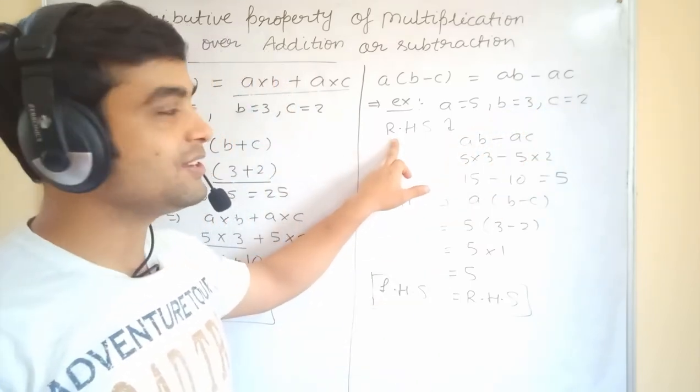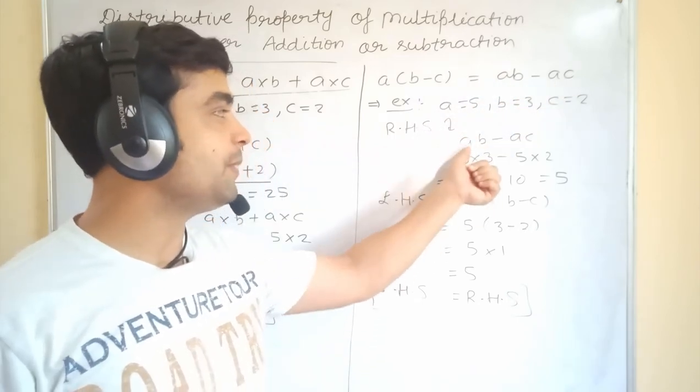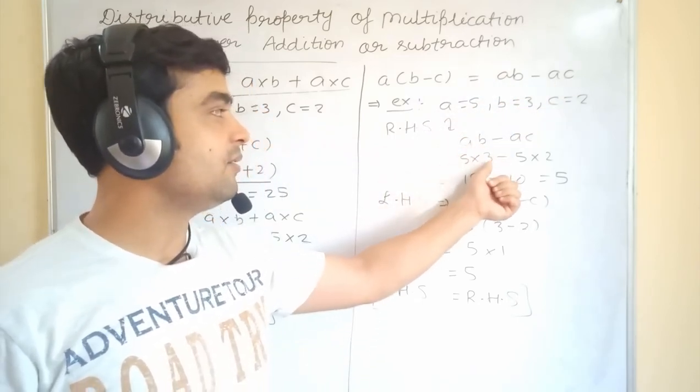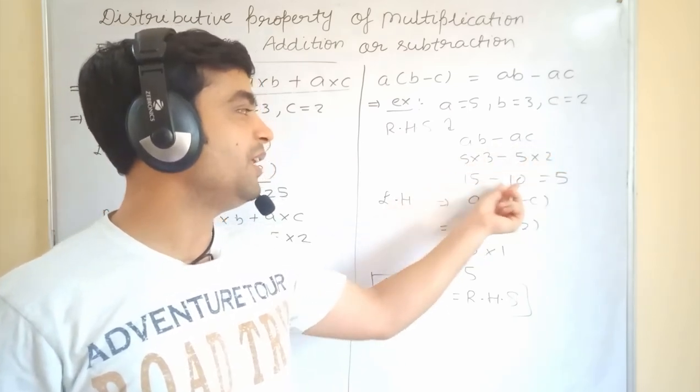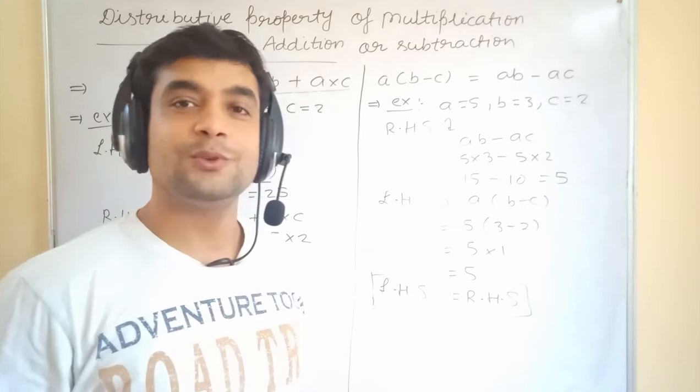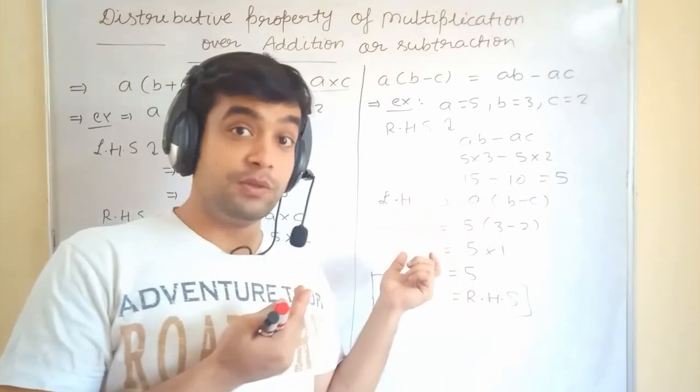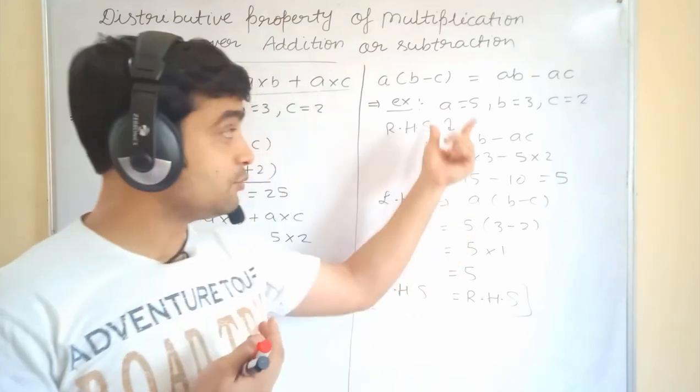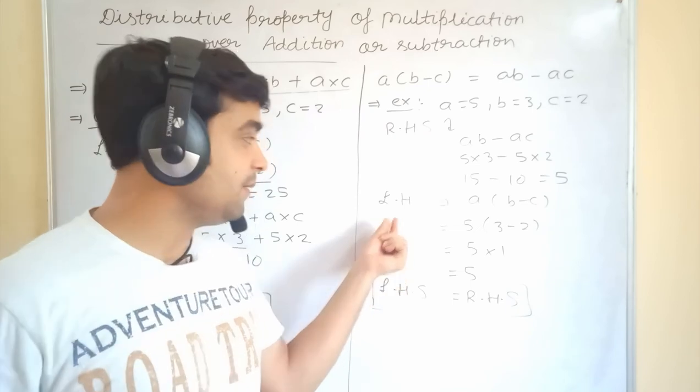We are going to check RHS. RHS means AB minus AC. We are going to put the value in the place of A, 5. B, 3. And, A again 5. And, C, 2. 5, 3 is 15 minus 10. It will come 5. So, it is a calculation only. You can perform. And, you have to solve with me. When I am solving any question, you have to also be active with your paper and copy.